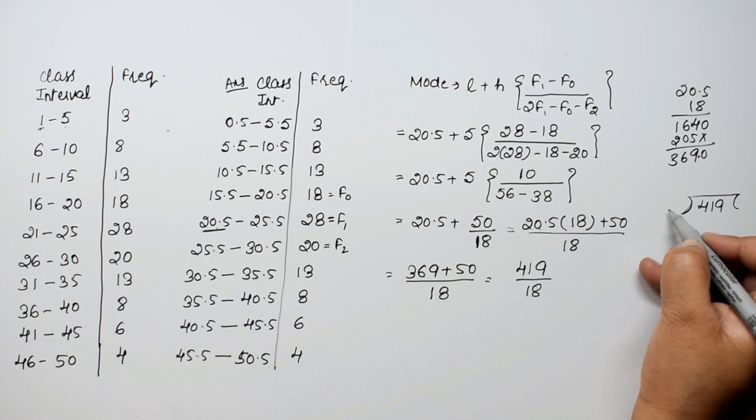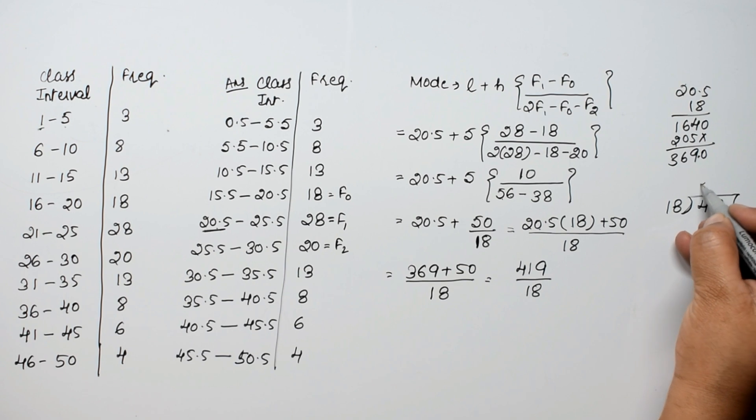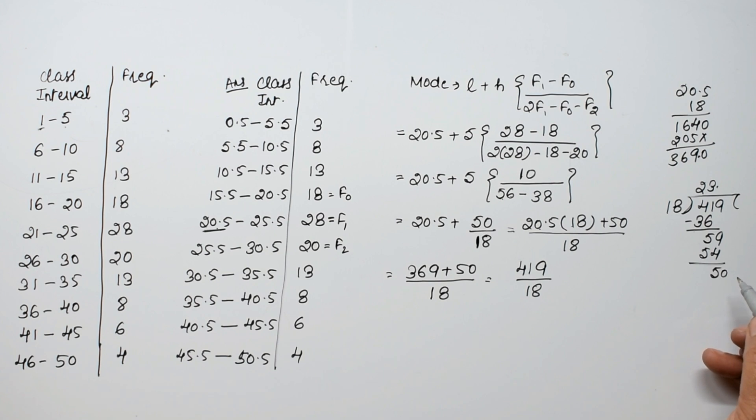Dividing 419 by 18: 18 into 41 goes 2 times, that's 36, leaving 5. Bring down 9 to make 59. 18 into 59 goes 3 times, that's 54, leaving 5. Put the decimal point, add 0 to make 50.